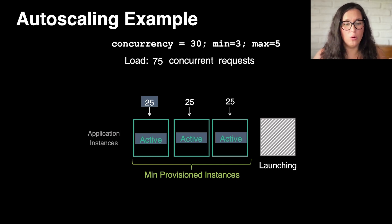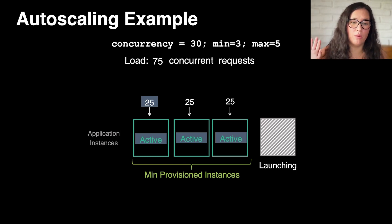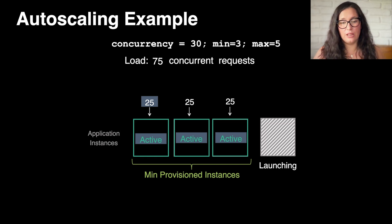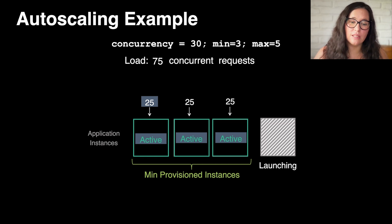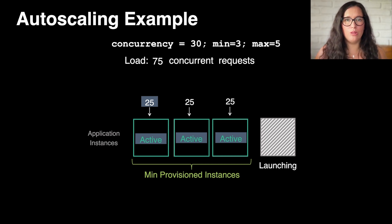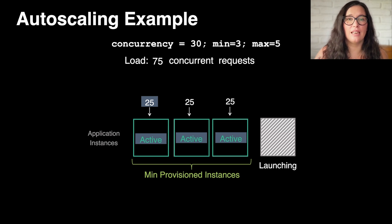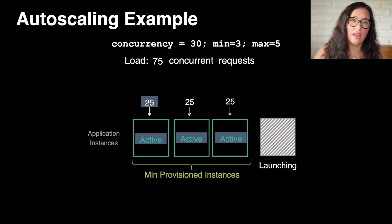Now the load increased to 75. We still have 30 maximum requests, three minimum and five maximum instances. Now the three minimum provisioned instances are all active and taking 25 requests each. Because we are so close to the edge — 75 requests and each instance can take 30 — that fourth instance is getting prepared and launched, so when more requests come in there will be an instance ready to serve them.